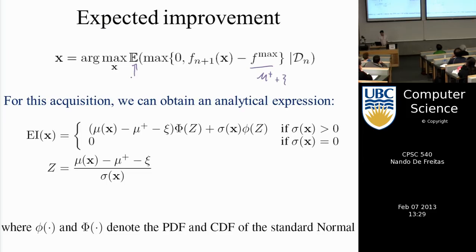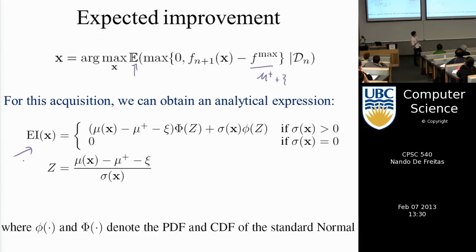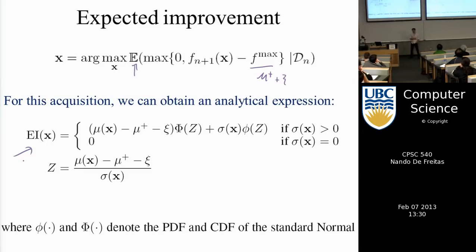That gives the following expression we call expected improvement. With a Gaussian you can do those integrals analytically and end up with an expression involving means and variances — these phi functions are the PDF and CDF of a 1D Gaussian. So we get an analytical expression for the expected improvement function.